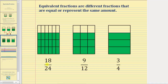Because we have three different fractions that are equal or represent the same amount, these three fractions are equivalent. Notice how to go from eighteen twenty-fourths to nine-twelfths, we would have to divide the numerator and denominator by two. Eighteen divided by two is equal to nine, and twenty-four divided by two equals twelve.